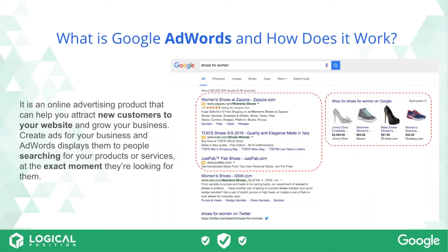I'm going to start by talking a little bit to give some baseline about AdWords before we dig into the specifics of these LSAs, the local service ads, and how they fit in. Google AdWords are the ads that appear on top of the search page — it's a great way to reach potential customers looking for exactly your product or service in your service area. These are a pay-per-click model — you only pay when someone's interested enough to click through to your website.